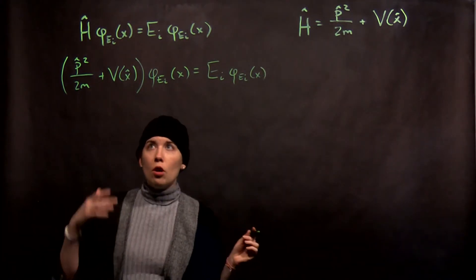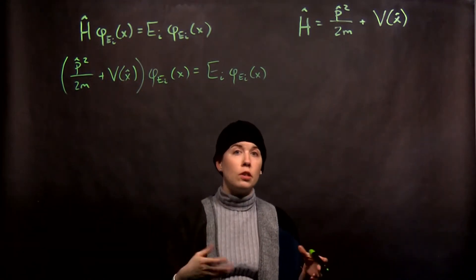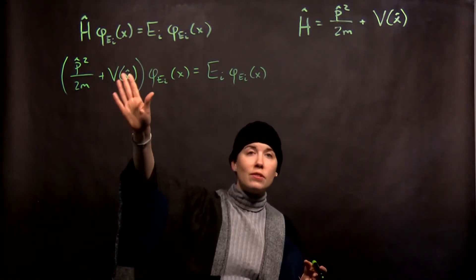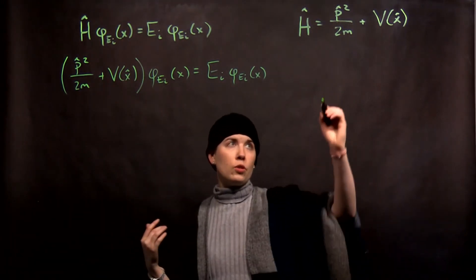So now all we've done is expanded what our Hamiltonian is and we're still keeping it fairly general. A specific quantum system would have a specific potential energy function of space and we don't have that yet. So next what do we need?